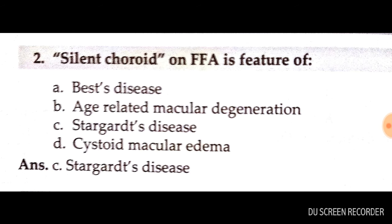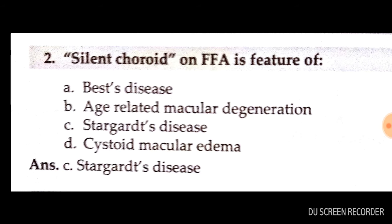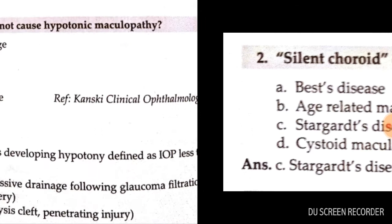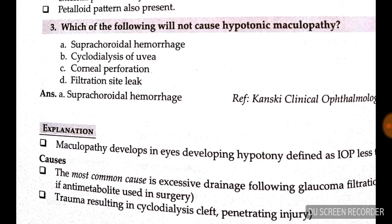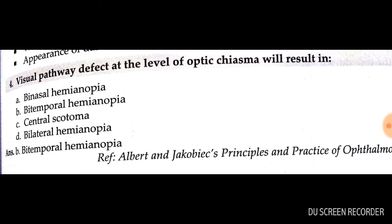Question number 2: silent choroid on FFA is a feature of Stargardt's disease — option C is correct. Question number 3: which of the following will not cause hypotonic maculopathy? Suprachoroidal hemorrhage does not cause it — options B, C, and D all cause hypotonic maculopathy.